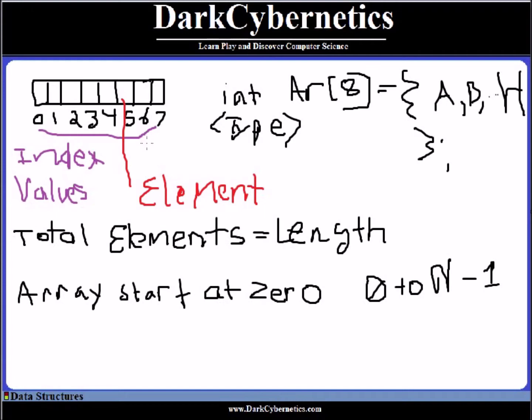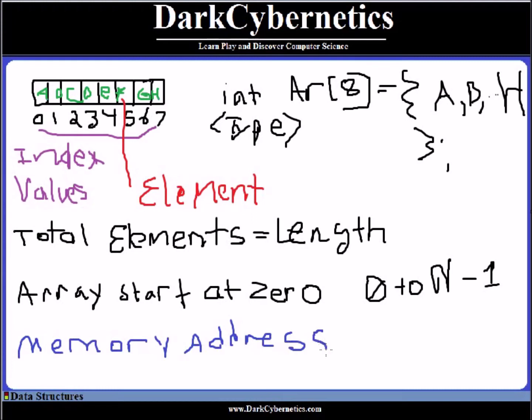Arrays are generally collections of items of the same type. So we had A, B, C, D, E, F, G, and H. There is a memory address associated with each one of these elements. Depending on the type of memory or the type of variable we hold, based on the size of the information we store on the computer for each data type, each element has a memory address.